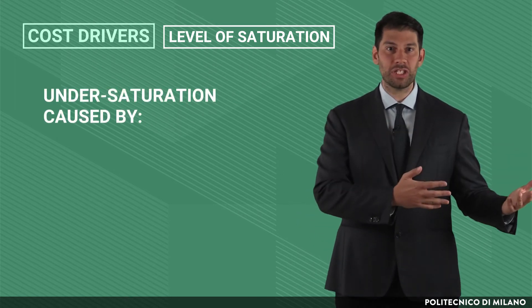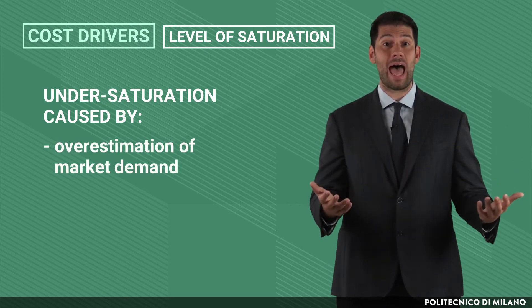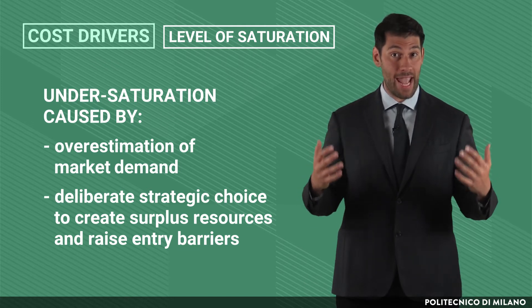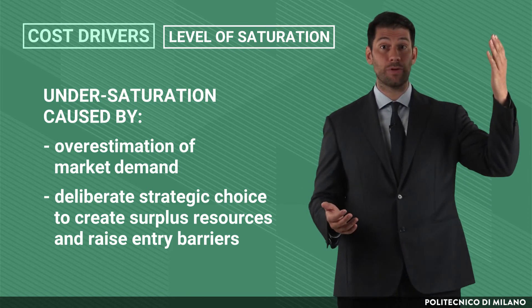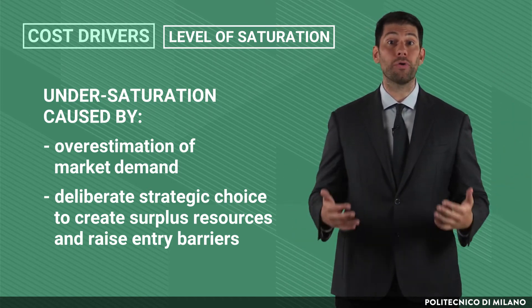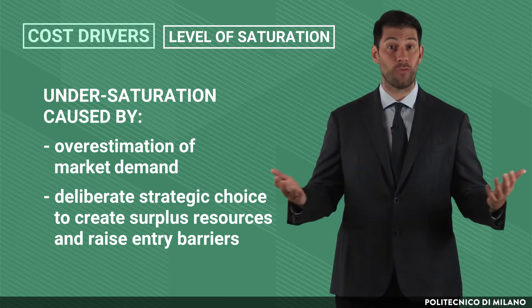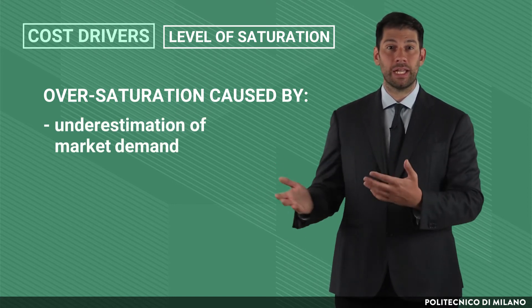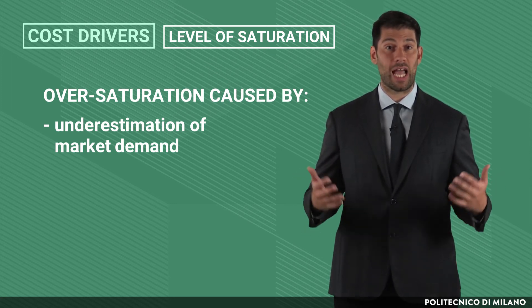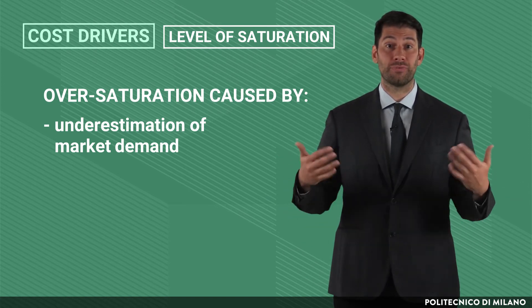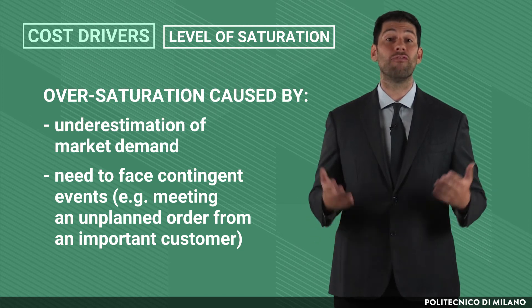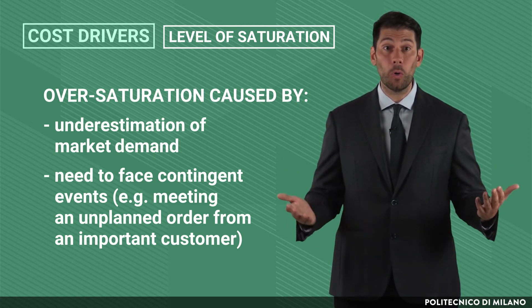The answer is in the complexity of real situations companies face. Under-saturation can be a consequence of a mistake in forecasting demand, leading to an over-sizing of the production system, but it can also be a deliberate strategic choice to create surplus resources that raise entry barriers, thus preventing or reducing the threat posed by new entrants considered in the five forces model. Even over-saturation can stem from a forecasting mistake, leading to an undersized configuration, or from meeting an unplanned order by an important customer whose strong bargaining power forces the company to accept the order even though the costs are high.